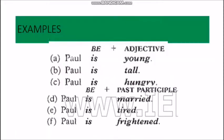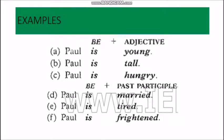We're going to see some examples about this topic. If we use adjectives we can say that Paul is young, Paul is tall, Paul is hungry. But we can also use the past participle to describe the status of Paul — we can say Paul is married, Paul is tired, and Paul is frightened.